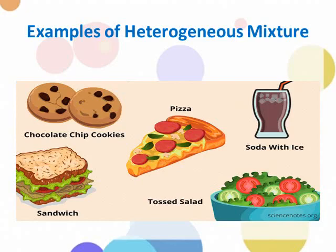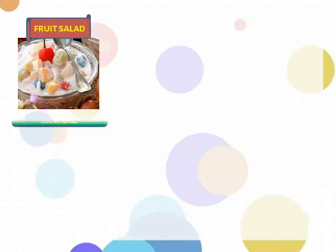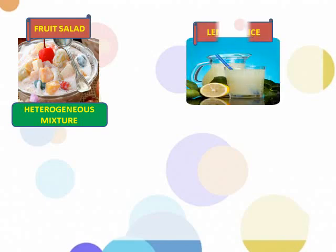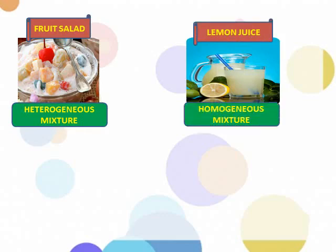Now let's try to answer other examples of mixture. You are going to name and identify if it is homogeneous or heterogeneous mixture. We have fruit salad — fruit salad is a heterogeneous mixture because you can see the different ingredients and it is non-uniform. Lemon juice is a homogeneous mixture — you cannot identify the ingredients mixed in lemon juice and it is uniform.